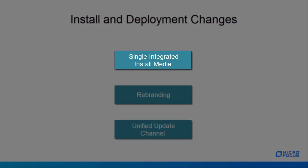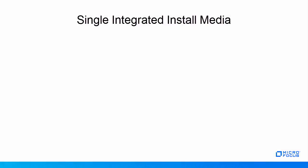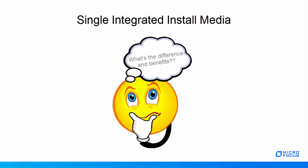Let's start with single integrated install media. You might be wondering what is the difference, because the integrated install media was already available in previous OES releases, and in OES 2018 it's only single integrated install media. What is the benefit?